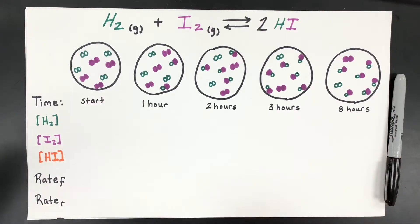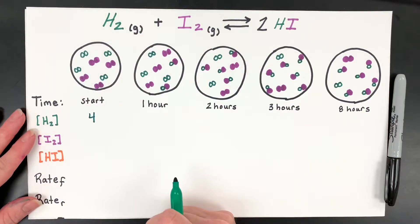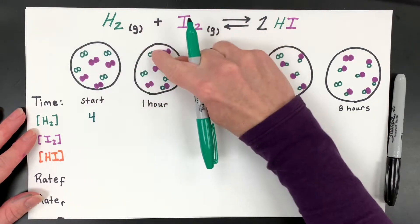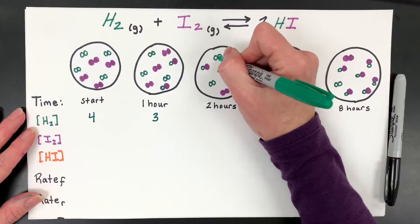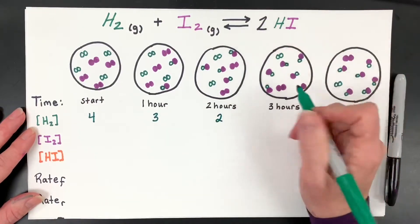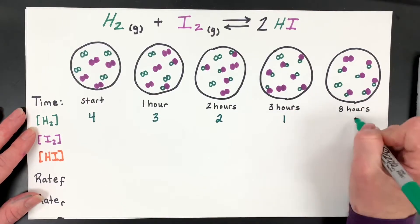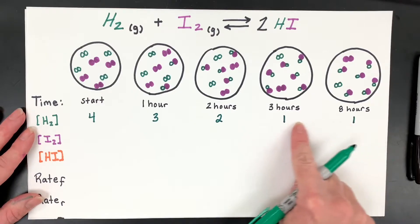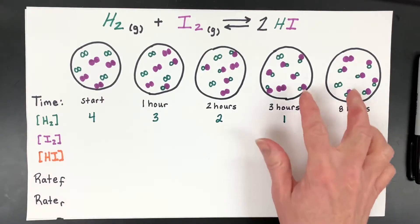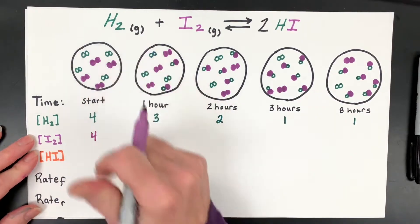As the hours go by, it reaches equilibrium around this point where you see no net change. Let's prove that with some numbers — let's count. At the start, we have four particles of hydrogen. Then three at one hour, two at two hours, and one at three hours. We reach no change in concentration, which means we're probably at equilibrium.